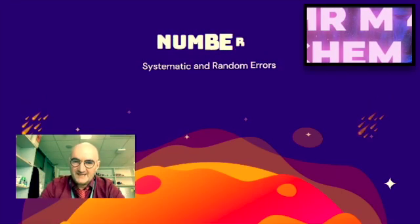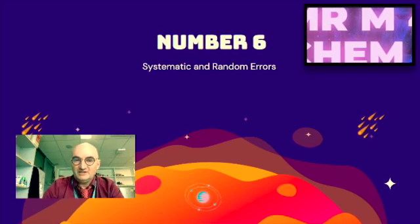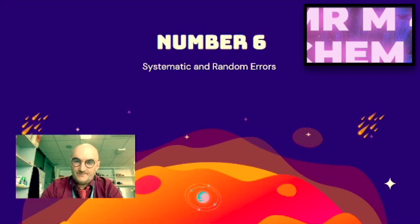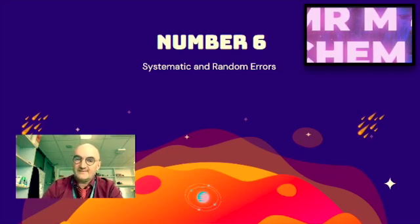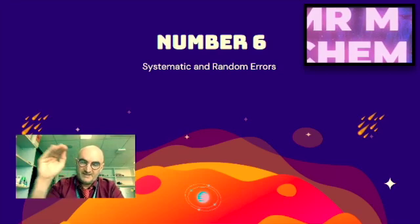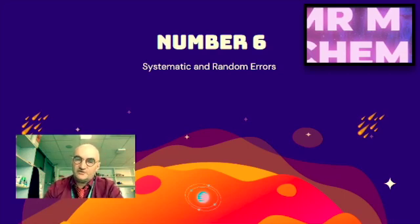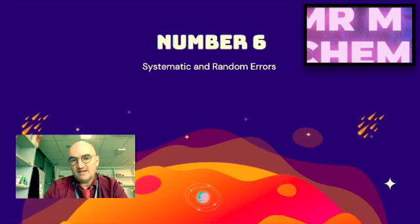Coming in at number six, systematic and random errors. It's not a surprise. The IB love you to talk about systematic and random errors. Repeat will reduce random errors, not systematic. What's the difference? Do you understand the difference? Can you quantify or can you at least scale which is the biggest, which is the smallest, which ones are in between? Where are they relative to each other and what are your improvements as a result of the errors that you have identified?